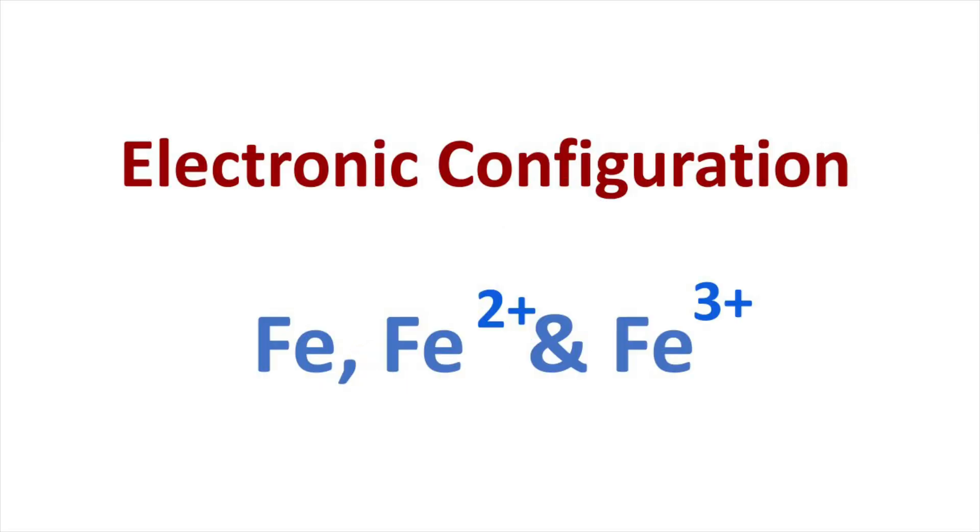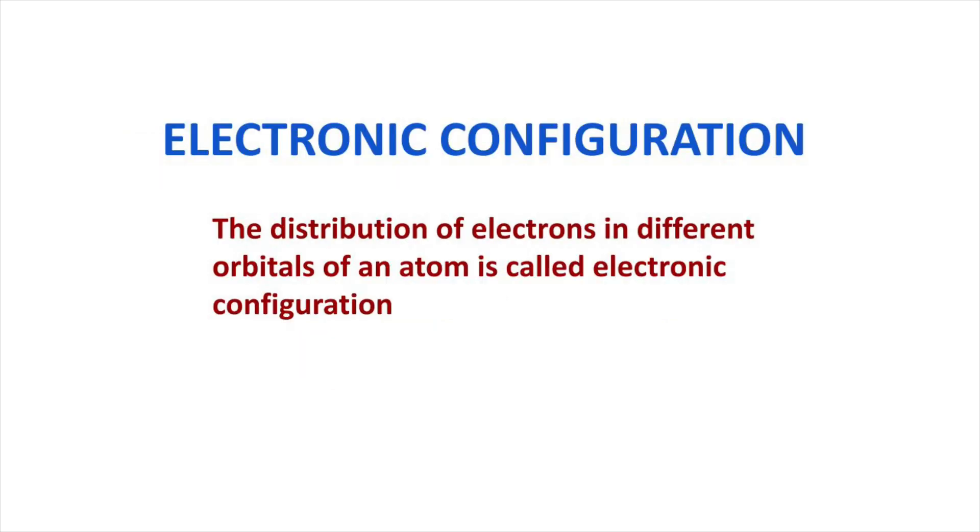Welcome to Aurora chemistry for everyone. Let us see how to write electronic configuration of iron and its ions Fe2+ and Fe3+. The distribution of electrons in different orbitals of an atom is called electronic configuration.